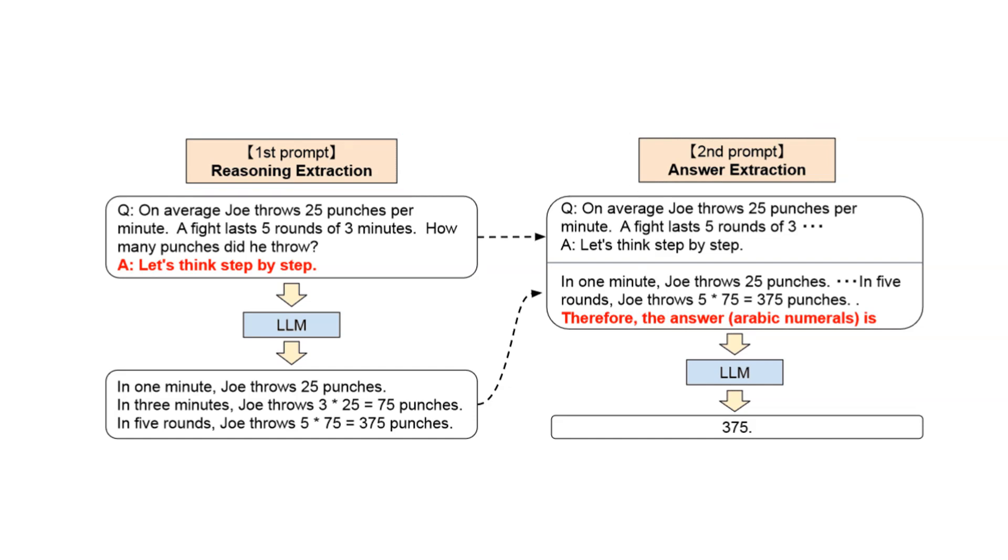In the first step, LLM generates the reasoning steps based on the original prompt and the magic phrase. Instead of providing examples with detailed reasoning steps, zero-shot COT simply adds the magic phrase, let's think step by step, to the original prompt.